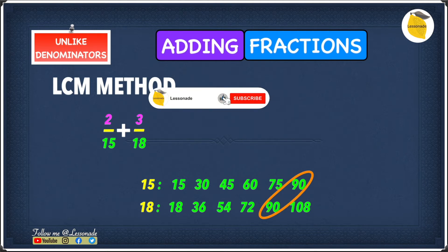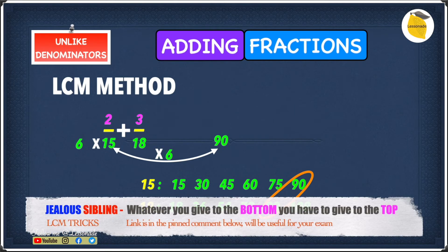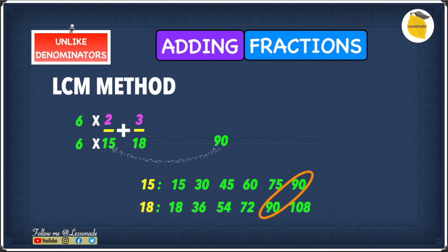We now know that 90 is our lowest common multiple. Next we're going to see what number we have to multiply to 15 to give us 90, and that number is 6 because 15 times 6 gives you 90. If you times the bottom number by 6, we have to times the top number also by 6 because whatever you do to the bottom number you do to the top number. We know that 15 times 6 is 90 and 6 times 2 is 12, which means we get 12 over 90.